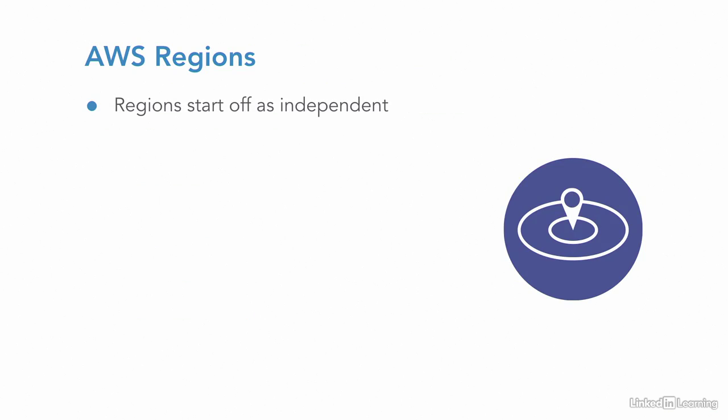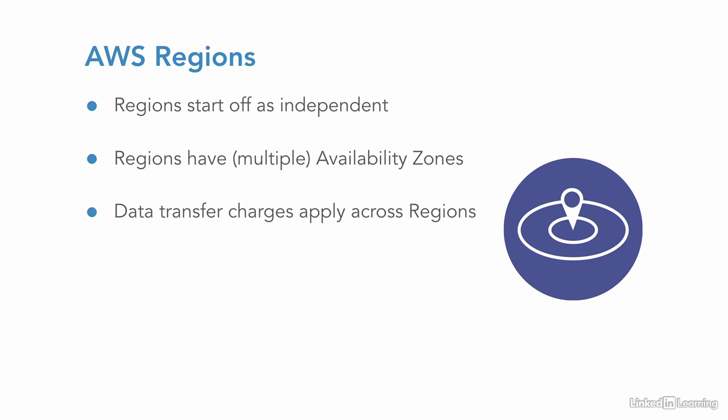Starting off with regions — they're independent. If I'm in Canada, there is a region in Canada, the central region, that has resources available for any Canadians who wish to use resources only in Canada. There are resources all across the world, including the United States, Europe, and Australia. The regions are large geographical areas, so they're split into what Amazon calls availability zones. You can think of an availability zone as where the data centers are, though there are also other services in that area of the region. One thing to consider when working at AWS is the cost structure — there are charges for packet flow, data transfer charges from source to destination.